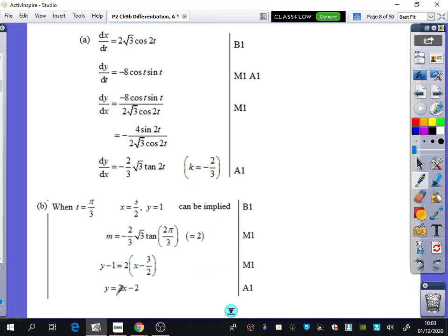And I'll put the mark scheme up on the next page so we can see, did we actually get this? Yep, it is y equals 2x minus 2. And we did get that k was minus 2 over 3 for this one that we've got here.